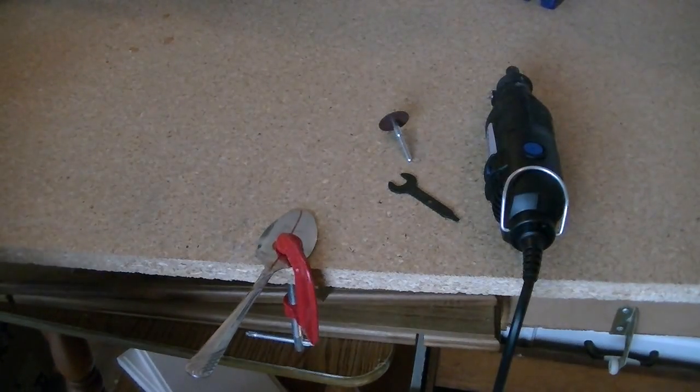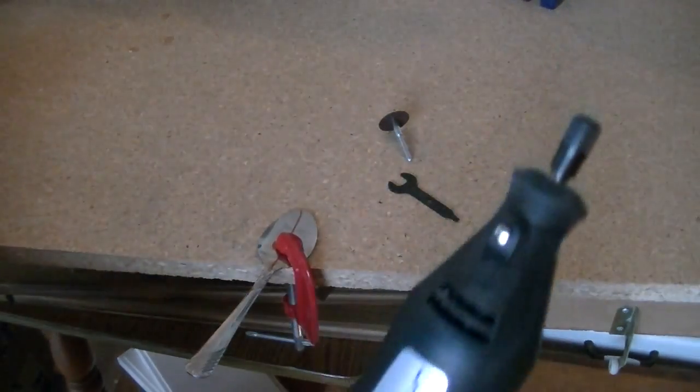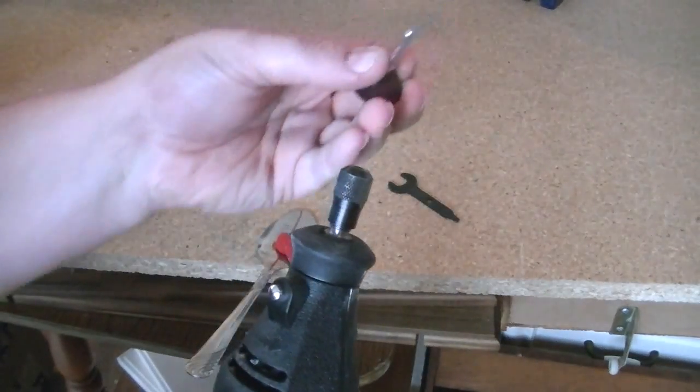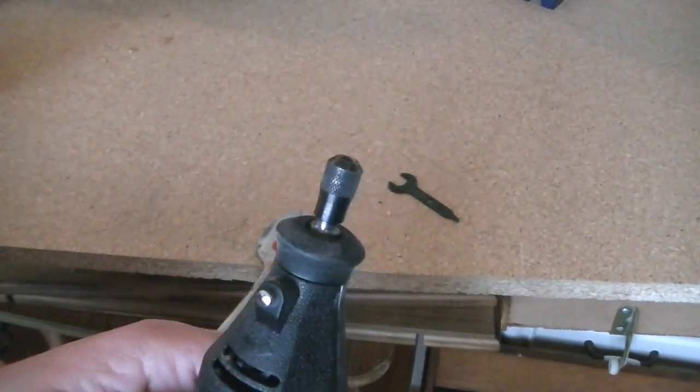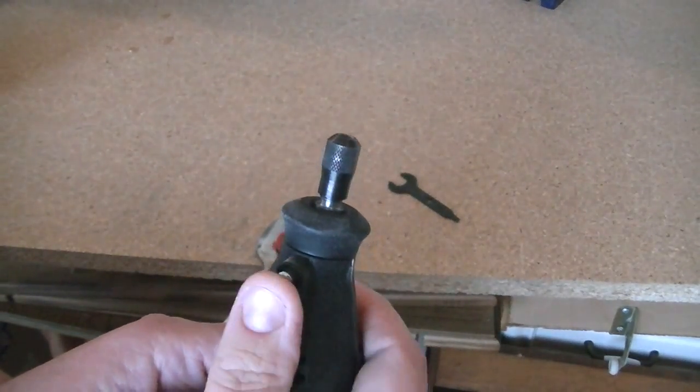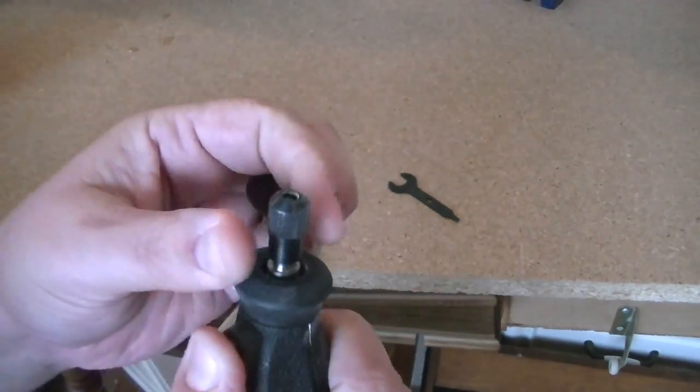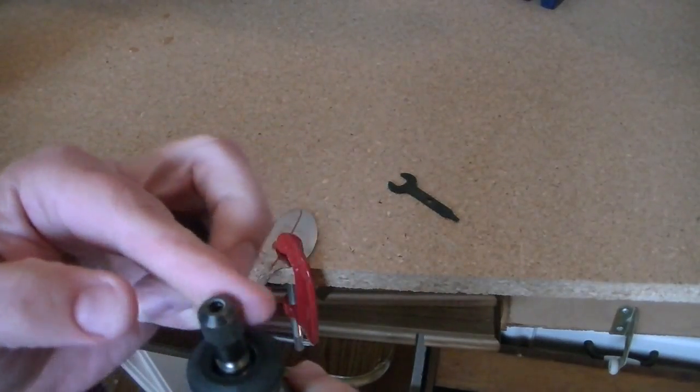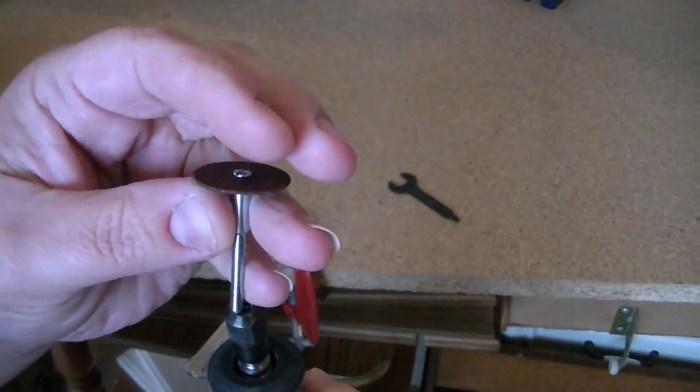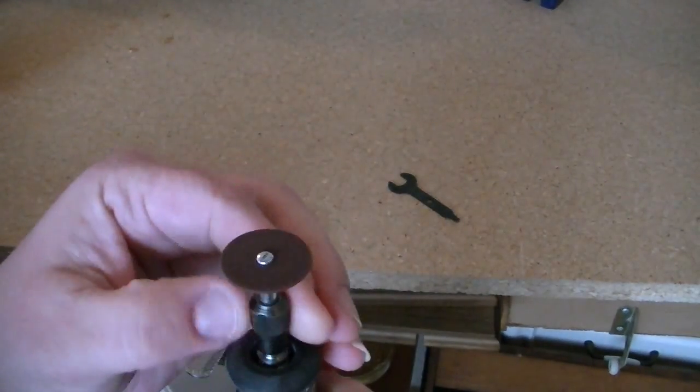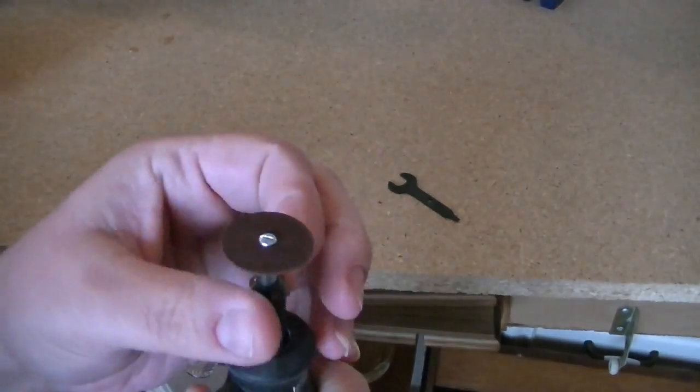Okay, so let's get started. The first thing you're going to need to do is insert your disc into the shaft of your Dremel. So to do that, you're going to push the silver button so that you can open your shaft and slip in your collet and then tighten it while the button is still depressed.